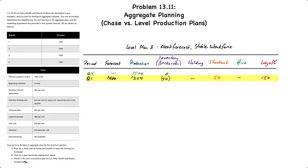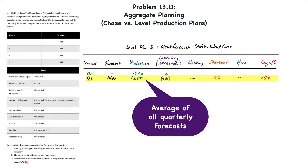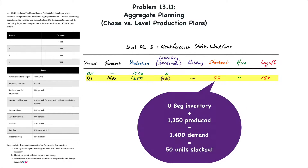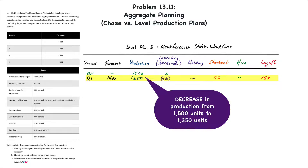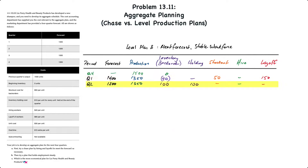In quarter one, the forecast is 1400 units and production will be the average of all four quarters, which is 1350 units — that's what a level plan is. Zero beginning inventory plus 1350 produced minus 1400 sold is a shortage of 50 units, so there's no inventory holding cost but there will be a stock-out cost. Also, since production dropped from 1500 to 1350 units, a reduction of 150 units, this results in a layoff of 150 equivalent units.